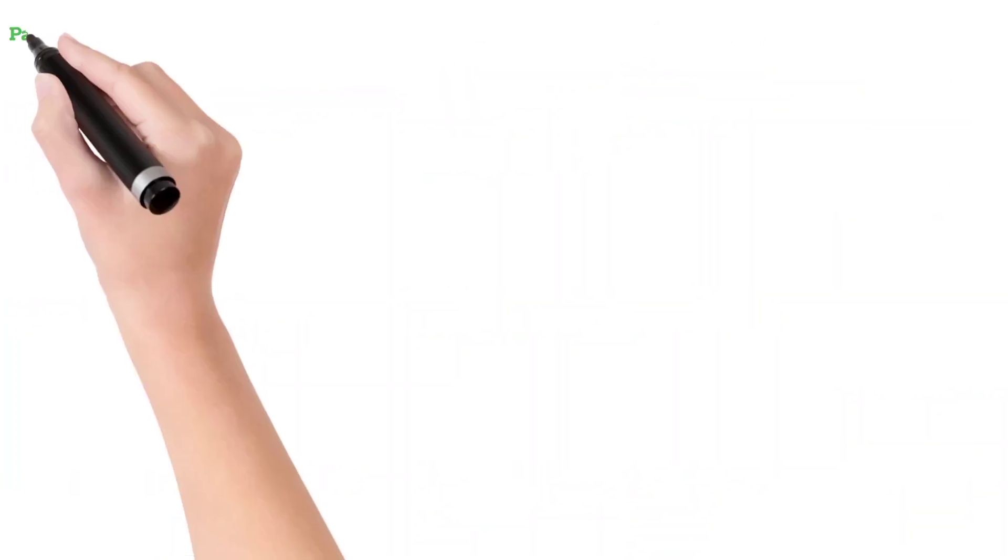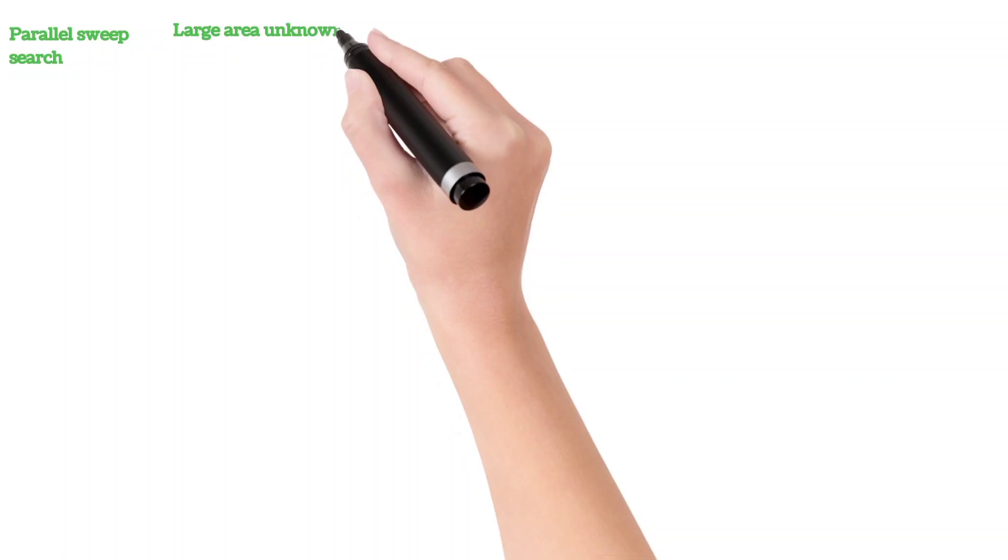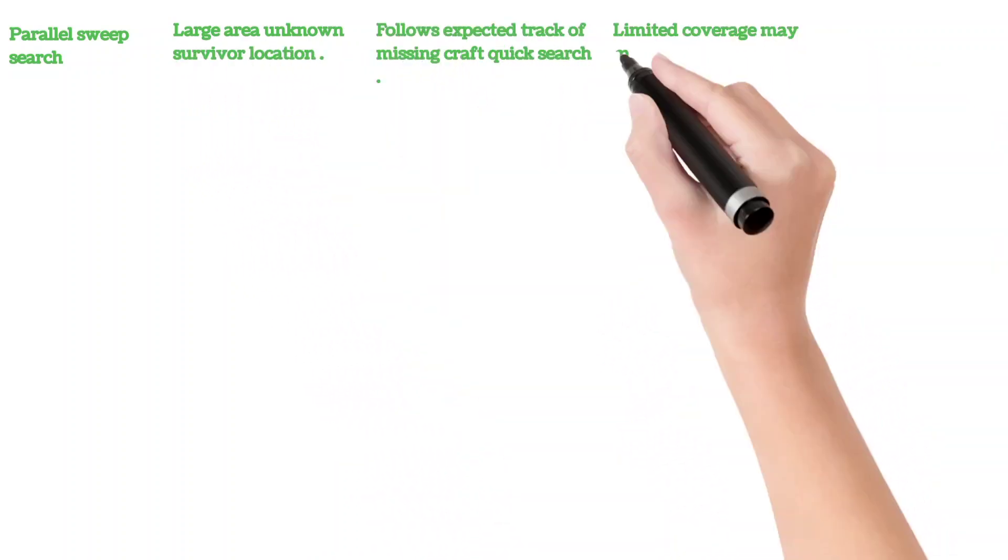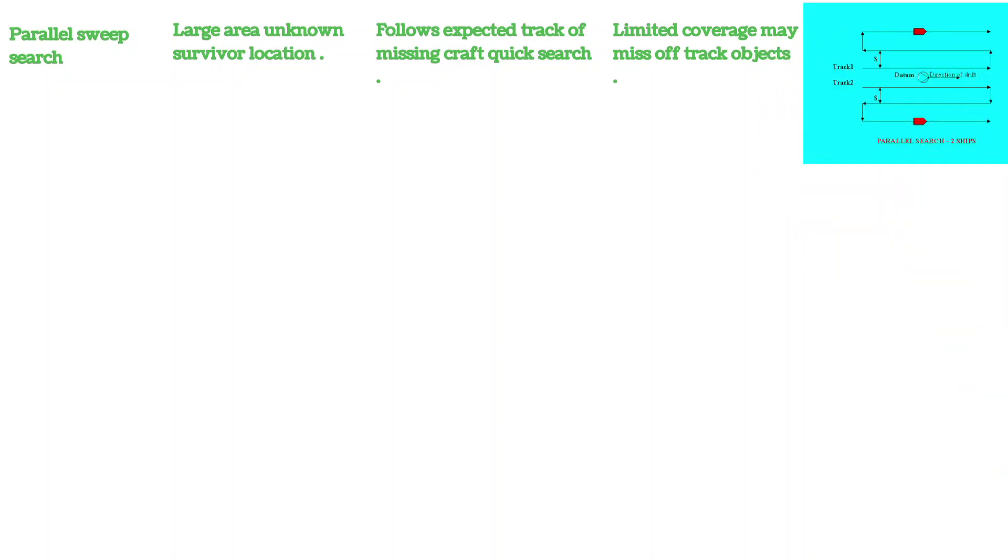Then we have parallel sweep search. This is for large area which is unknown survivor location. It follows expected track of the missing craft for quick search. Limited coverage may miss off-track objects. As shown in the figure, this is the parallel search.